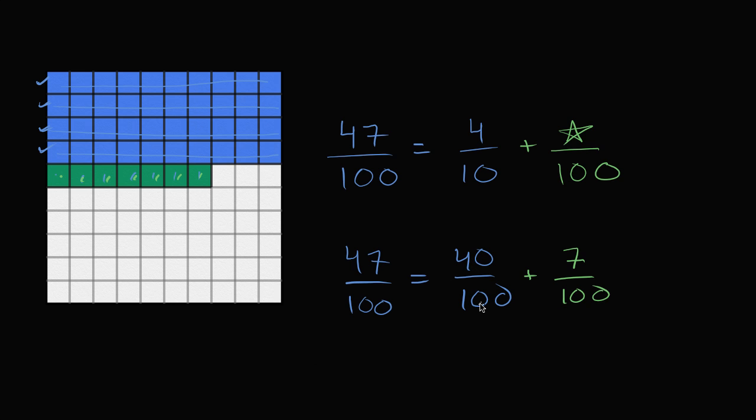Now 40 hundredths is the same thing as 4 tenths. 40 hundredths is the same thing as 4 tenths. There's a bunch of ways we could think about it.